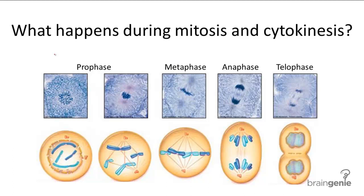Mitosis and cytokinesis are the last two phases of the cell cycle and they complete DNA and cell division. Mitosis is the division of the genetic information and it does this in four stages: prophase, metaphase, anaphase, and telophase.